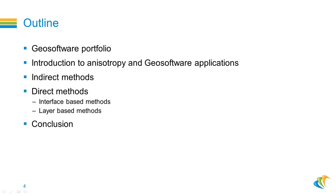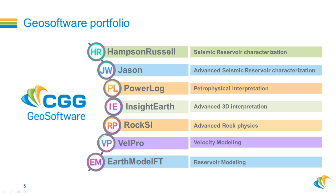Within GeoSoftware we have Hampson-Russell for seismic reservoir characterization, and advanced seismic reservoir characterization comes under Jason, so you can do advanced editing of the reservoir model and also characterize it using seismic data. Petrophysical interpretation comes under PowerLog, and InsideEarth provides advanced 3D seismic interpretation for faults, fractures, salt bodies, and stratigraphic features. Advanced rock physics modeling comes under RokDoc — now an independent tool — and velocity modeling comes under VelPro. Reservoir modeling is done with ArcCorder FT.